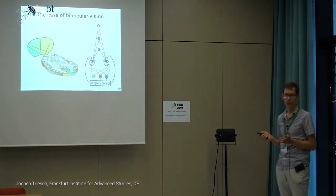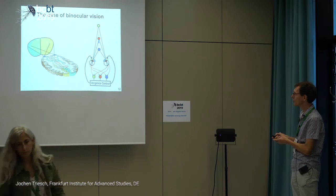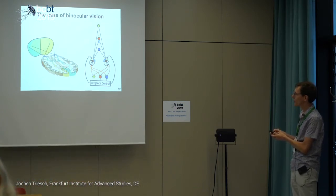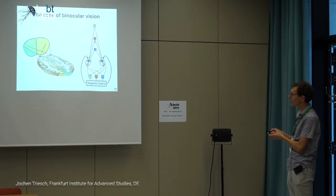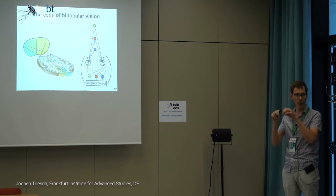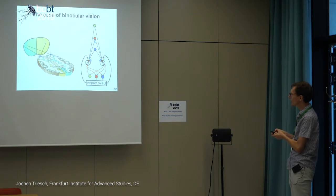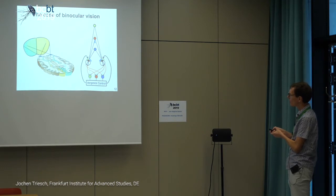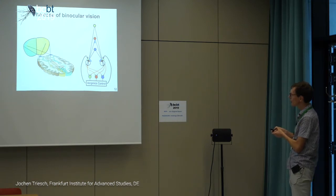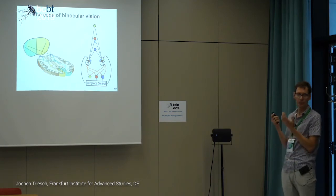For binocular vision: you may know that information from the two eyes is kept in separate pathways until it comes together in primary visual cortex, where information from the left and right eye first converges onto individual neurons. In visual cortex we have neurons that look at one part of the retina of one eye and a part of the retina of the other eye, and often they look at different parts — this difference is called disparity tuning.